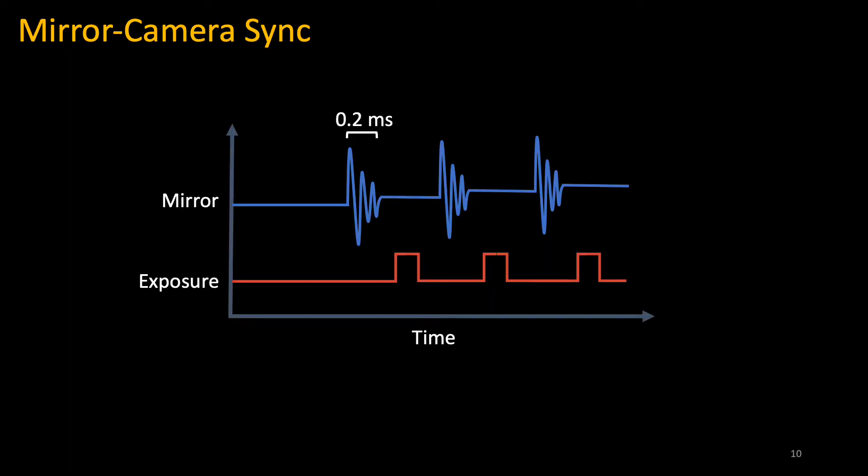It is known with galvo and MEMS mirrors that they require a settling time before triggering the camera exposure if you want de-blurred images. In our case, the settling time was 0.2 milliseconds, and this varied based on the resolution and number of measurements we sent at a time to the MEMS mirror.